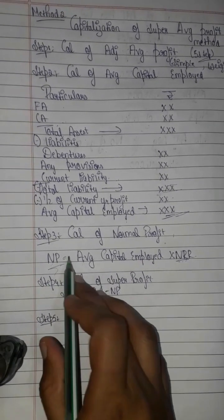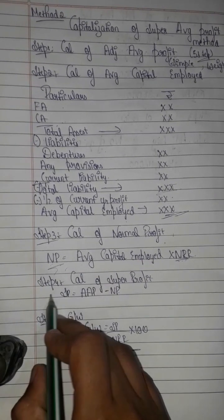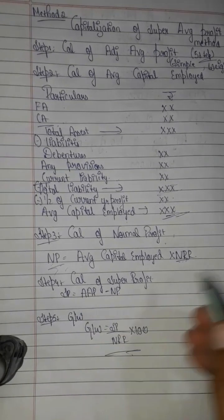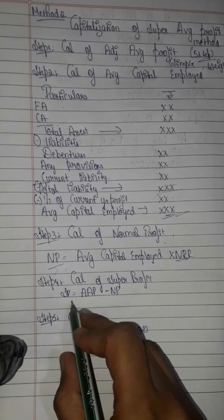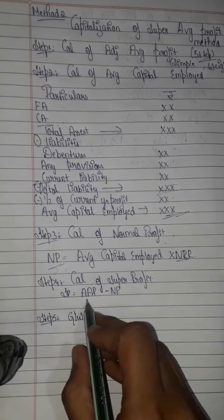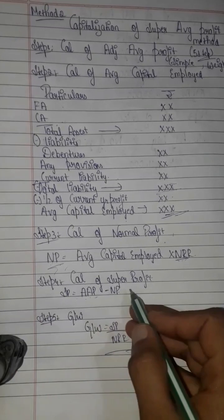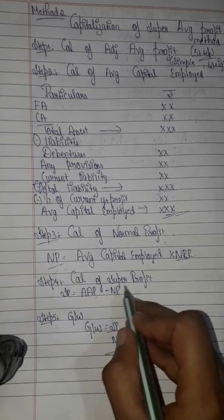Step 4 is the calculation of super profit. The super profit formula is: adjusted average profit minus normal profit. Step 5 is calculation of goodwill, which equals super profit divided by NRR, or super profit multiplied by the number of years of purchase.